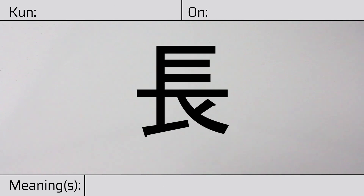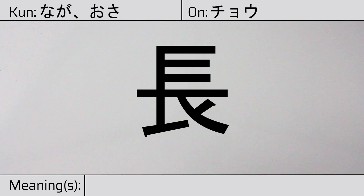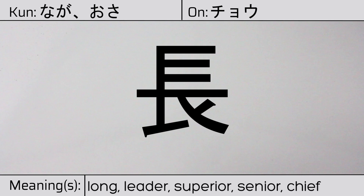Welcome to this lesson on Japanese kanji. Today, we'll be discussing this character. This kanji has kunyomi, or Japanese readings of naga or osa. And it has onyomi, or Chinese reading of chou. This character has the meanings long, leader, superior, senior, or chief.